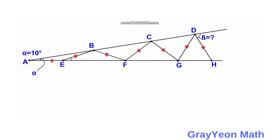Welcome to Greyhound Map. We are asked to solve for this problem. We are given two lines that intersect at point A, and in these two lines are inscribed several isosceles triangles. We are given the angle alpha which is 10 degrees, and we are to find the angle beta.